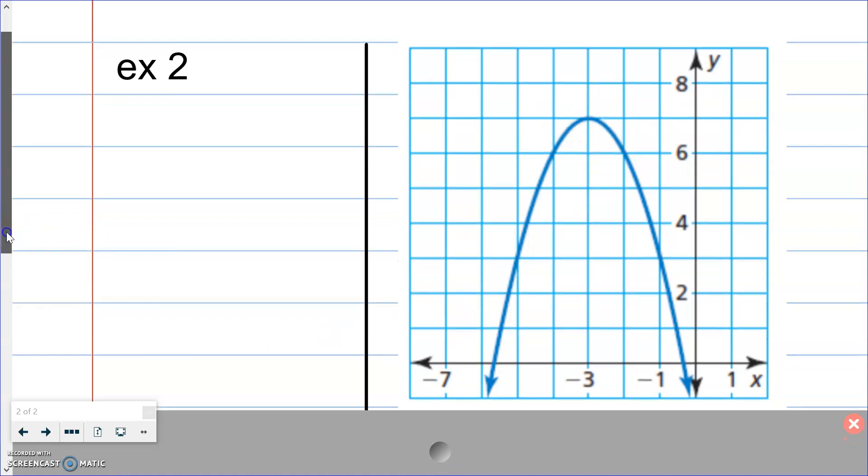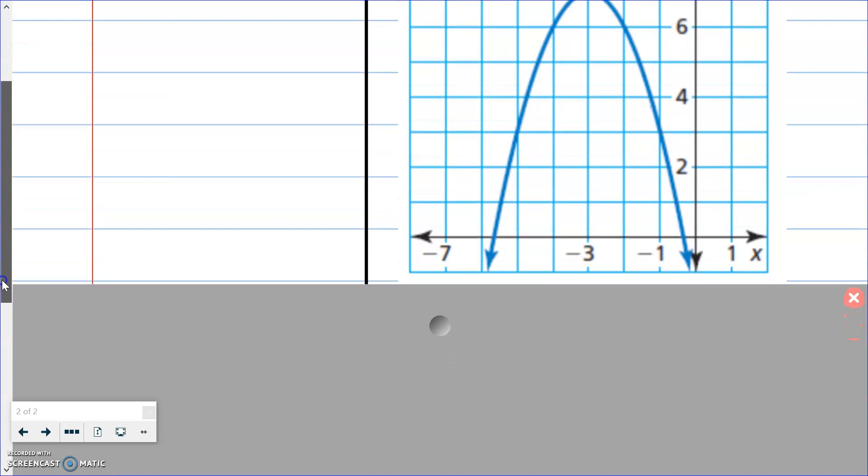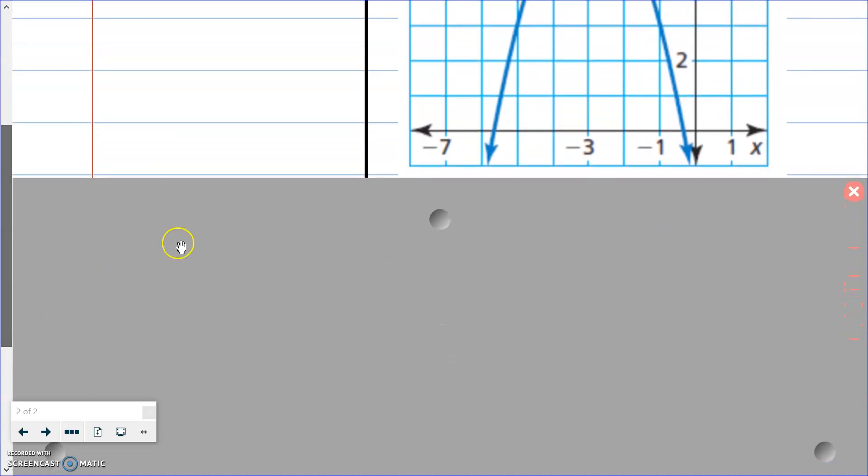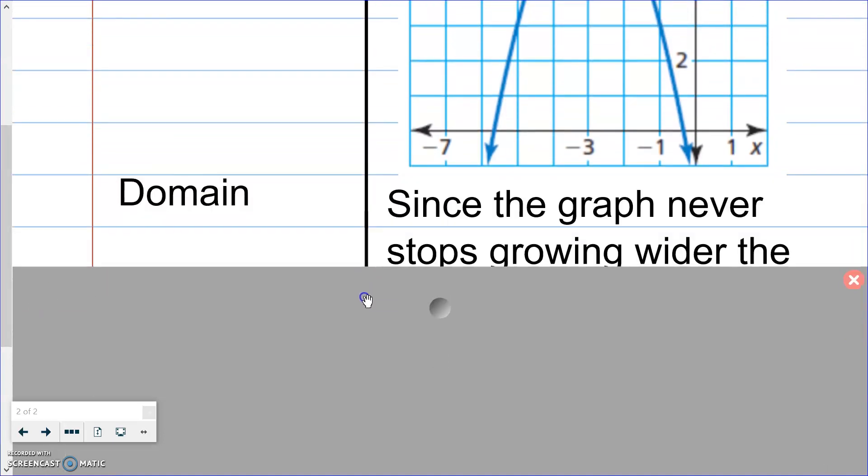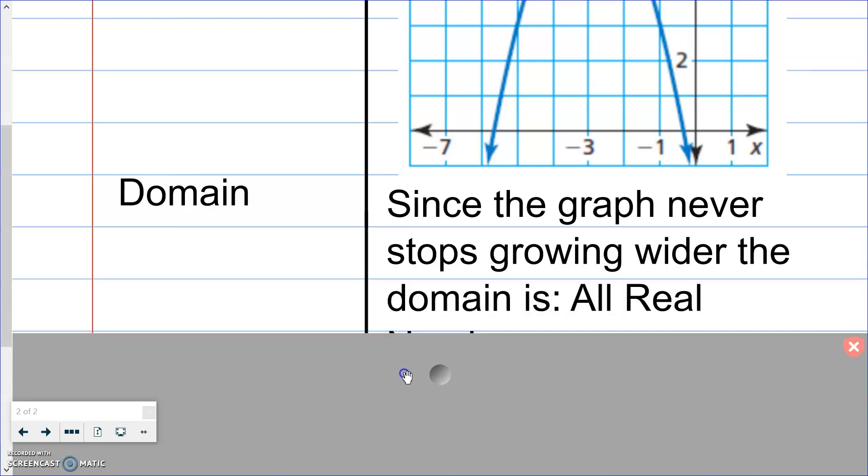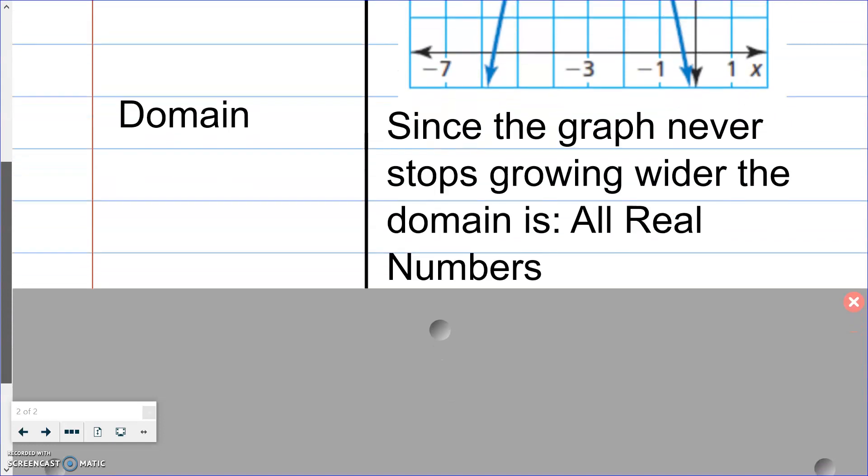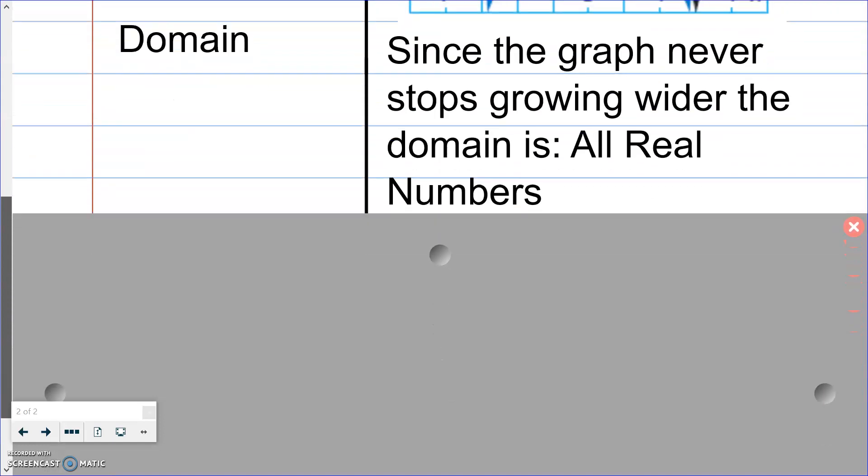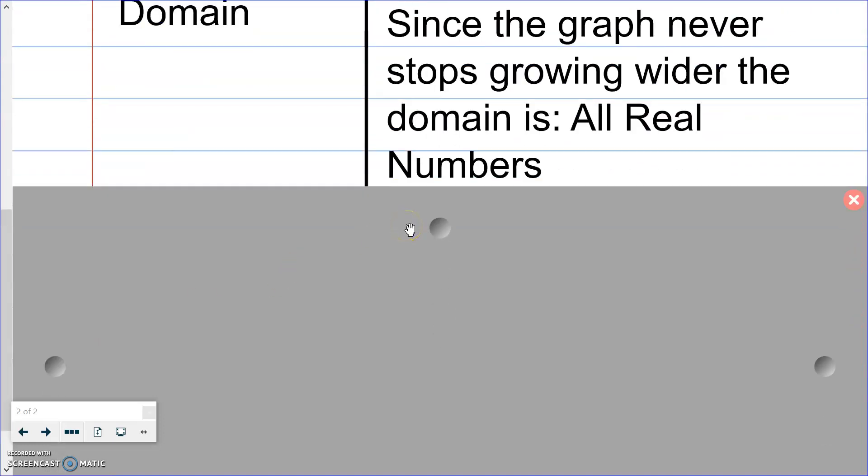So once again we're going to write our domain. Our domain is all the x's that we use and since we use all the x's, if you notice a pattern here, the graph will never stop growing wider. The domain is once again all real numbers and that's going to be the pattern that you see with parabolas. Since it always goes left and right and never stops growing it's always going to be all real numbers.